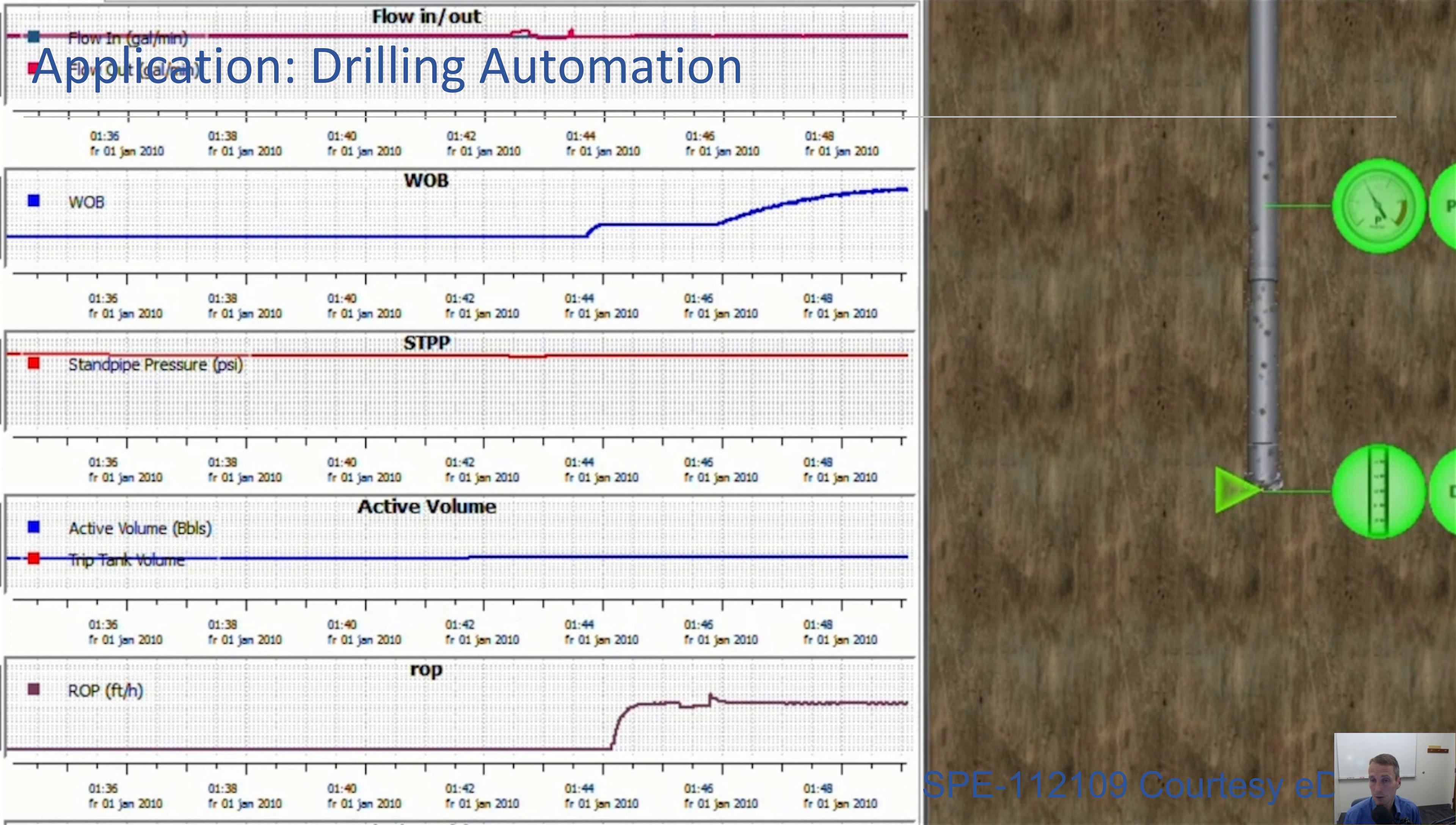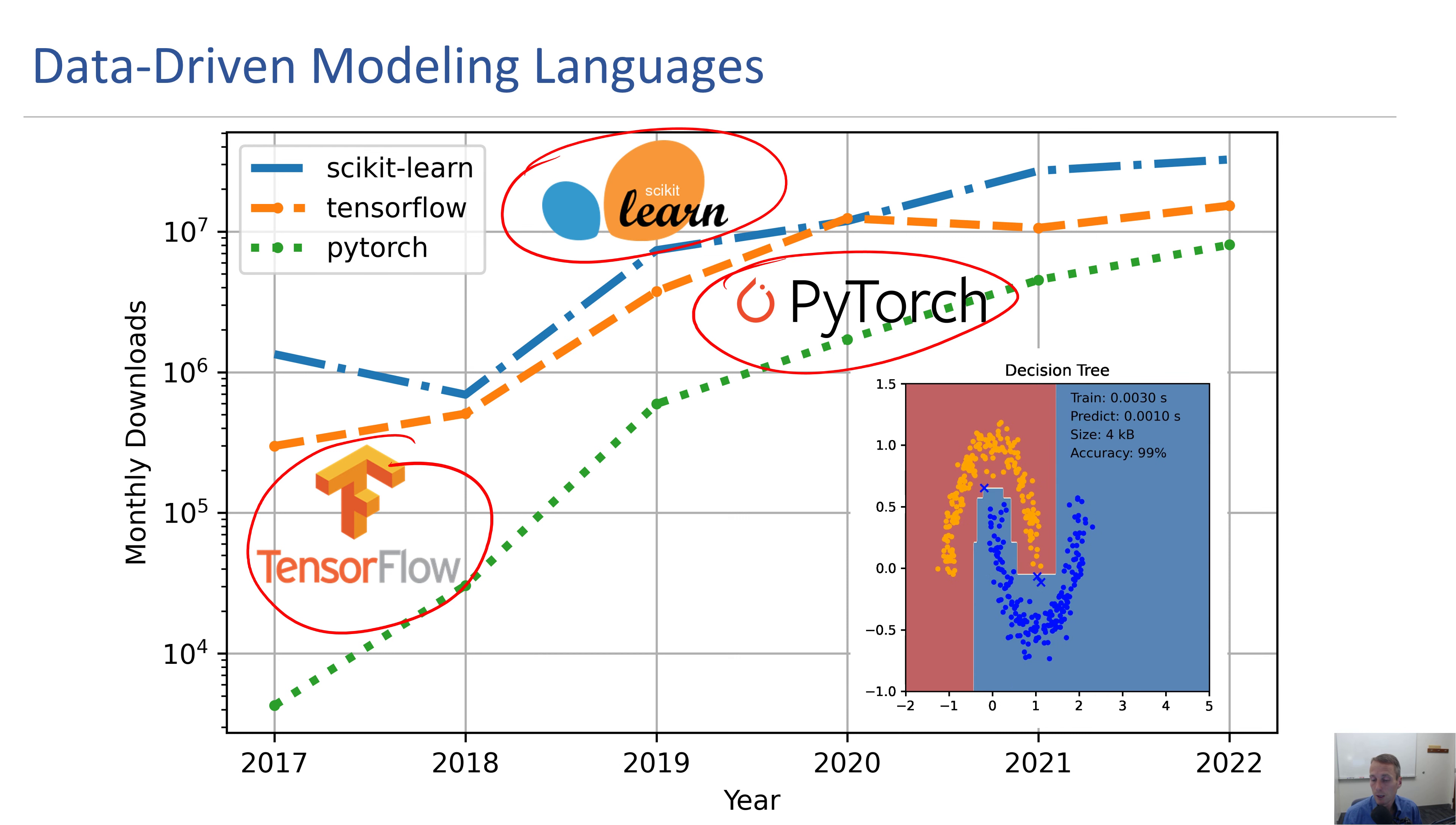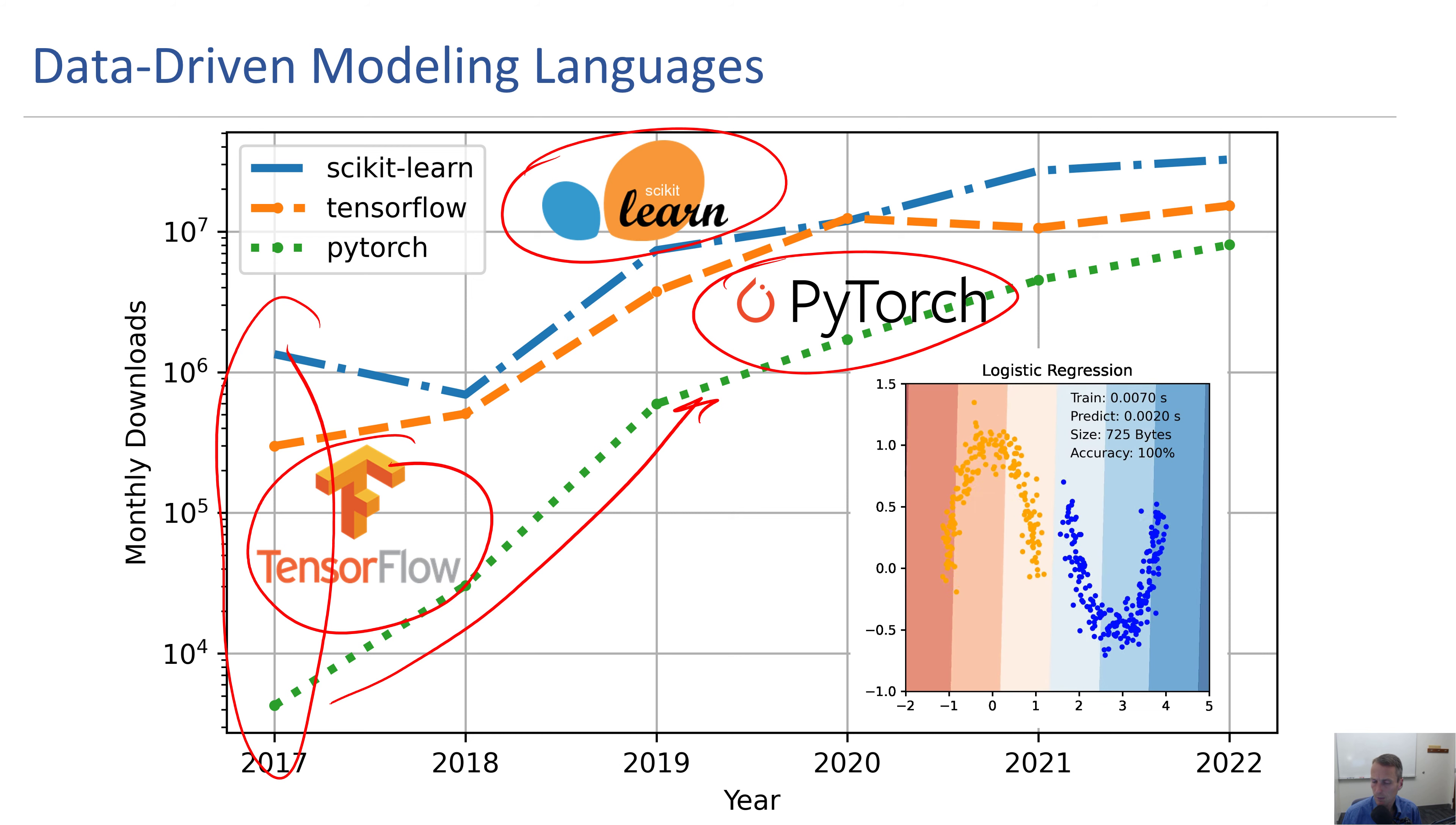There are very complex multi-physics types of problems that have been addressed with this equation-oriented approach, but I want to talk about data-driven modeling languages and the impact we've seen from those. We have three common packages here: TensorFlow, PyTorch, and sklearn. You can see from 2017 we've had a similar major increase in terms of monthly downloads.